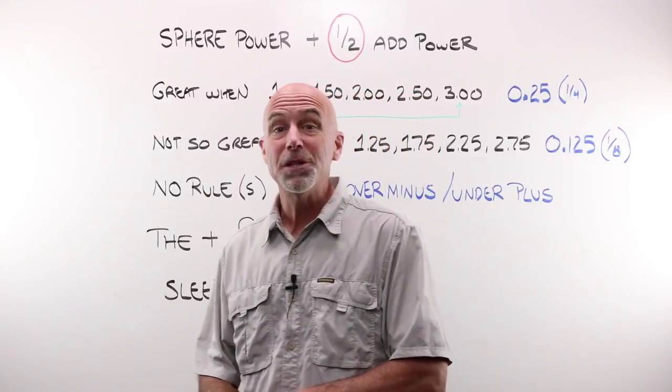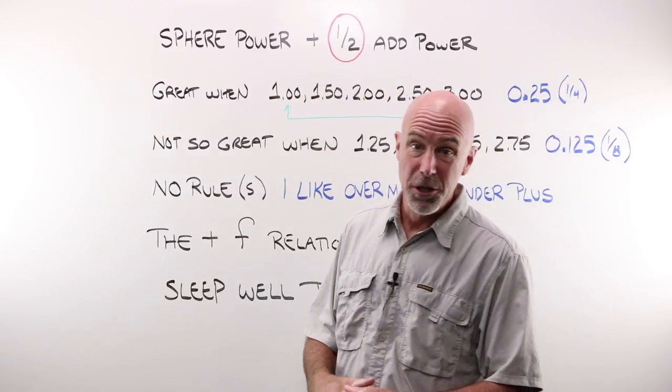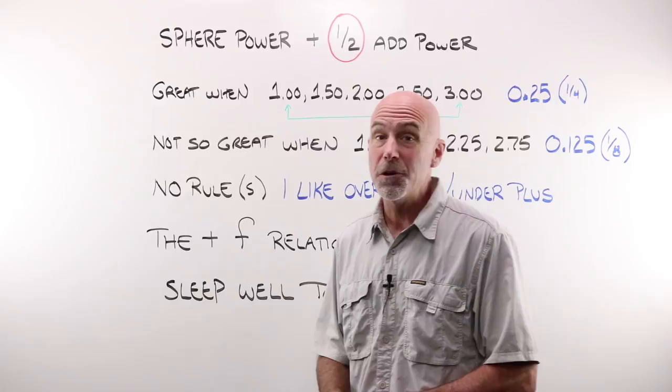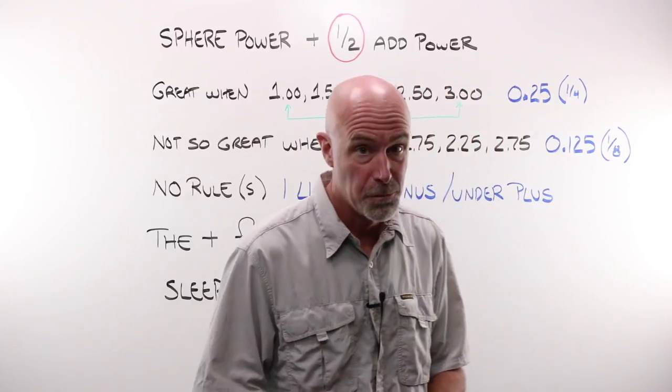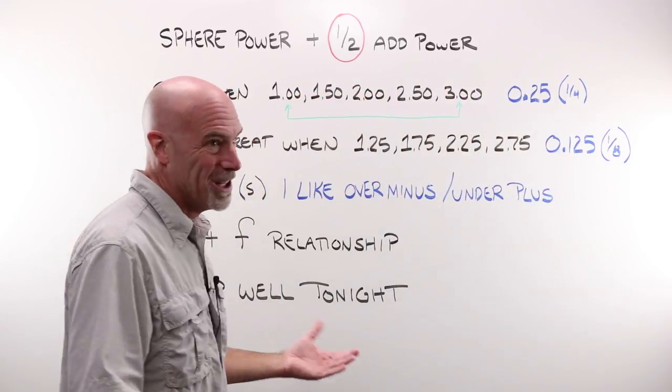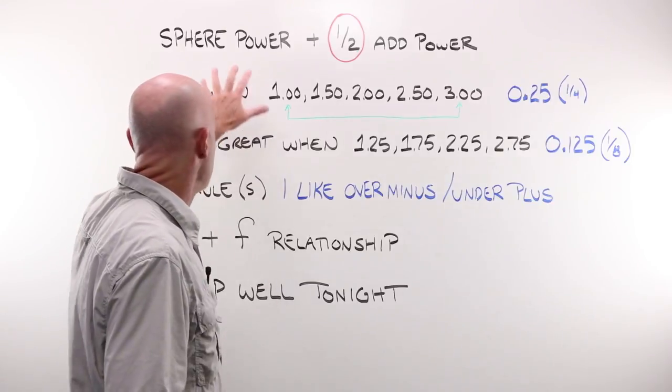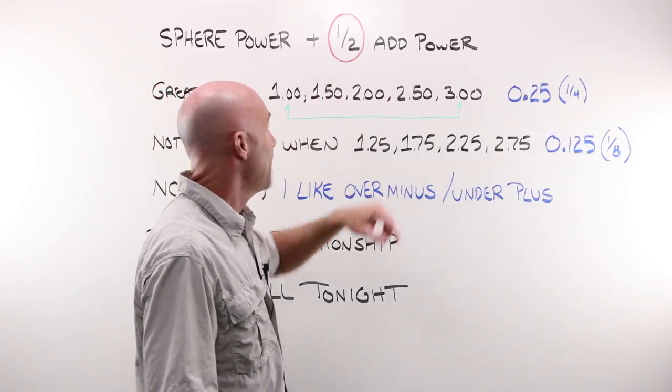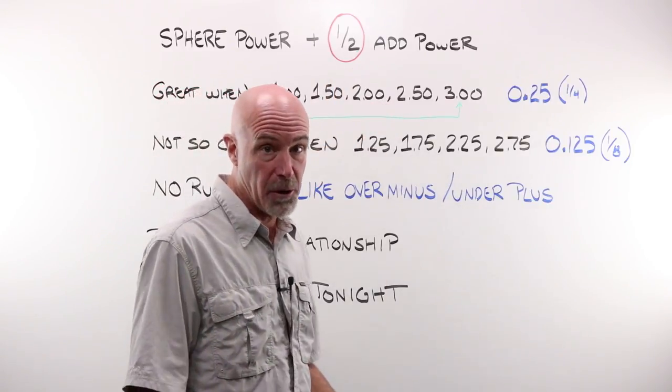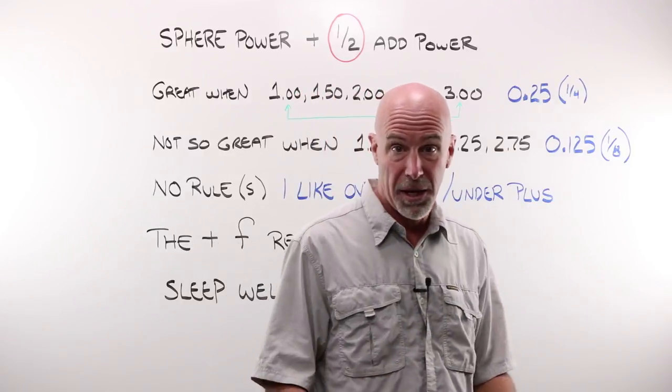Last time we got together we talked about creating a single vision nearer pair. This time we're going to talk about creating a single vision intermediate. The formula or the rule is you add your sphere power and half of your add power to create an intermediate power lens.